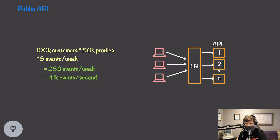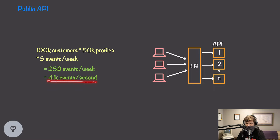Now let's do some math. We have 100,000 customers, each tracking 50,000 profiles, each submitting five events per week to our API. That gives us 25 billion events tracked every week, corresponding to 41,000 events per second. A single API server certainly wouldn't be able to handle that load, so we're going to need to scale horizontally. We'll introduce multiple servers running the same API and put a load balancer in front of them. Our users make requests to the load balancer, which directs them to whichever API node is available. The load balancer also provides fault tolerance — if one API node fails, users are directed to other available nodes.